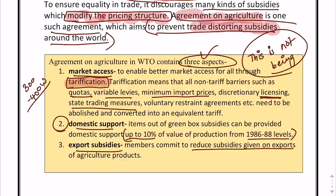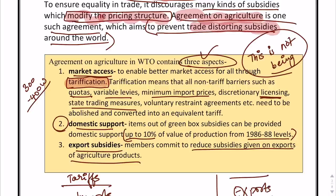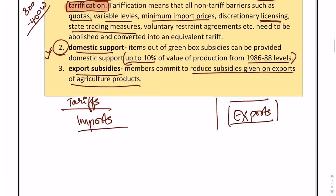The third aspect is export subsidies: members commit to reduce subsidies given on exports of agricultural products. So on one hand you are trying to reduce or restructure barriers on imports, and on the other hand you are ensuring that members reduce subsidies on exports so that they don't have an undue advantage in the international arena when exporting goods to other markets. These are the three major aspects under the Agreement on Agriculture.